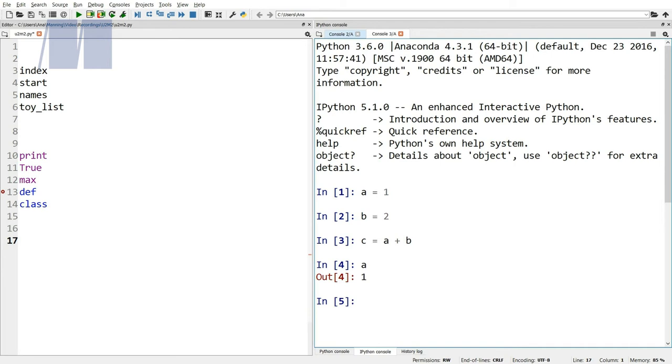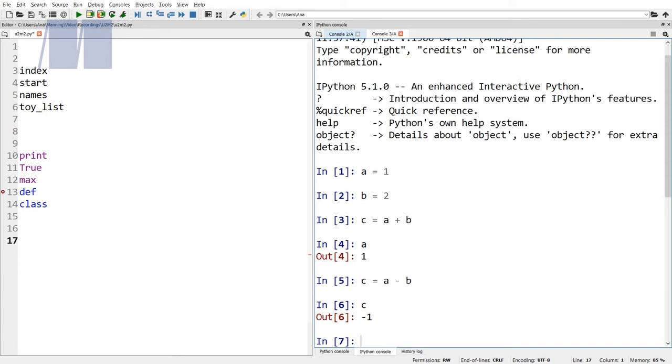After you create a variable name, you can update the name to be any other object. So just now you created variables a, b, and c. You can update the value of c to be something else. Type c is equal to a minus b and hit enter. This reassigns the variable c to have a new value. If you type c and hit enter, you can see the new value of c.